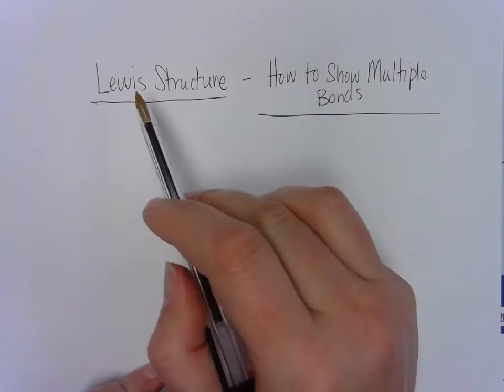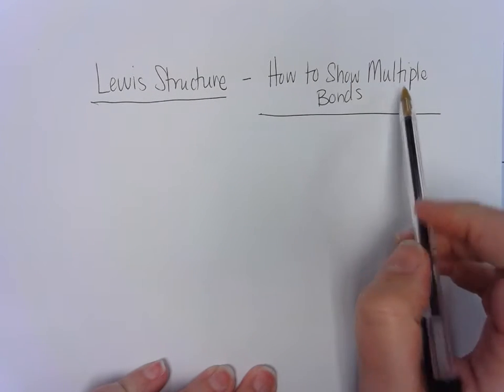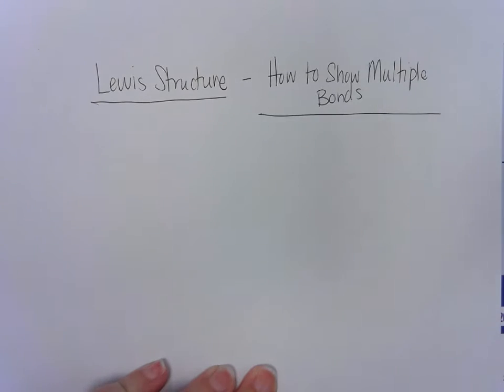All right, in this video we're going to do Lewis structures again showing multiple bonds. In this case, a little bit different than the last time, we're going to look at cases where we have double or triple bonds.